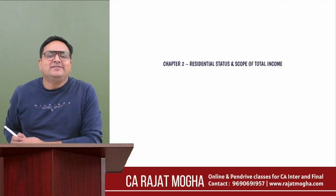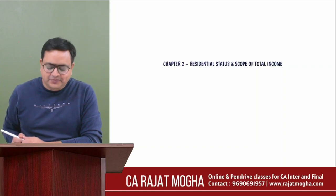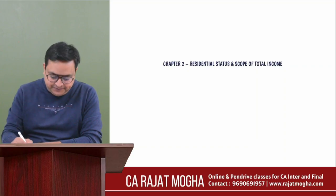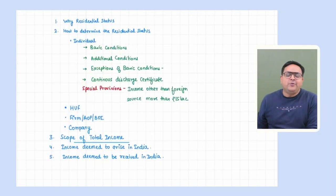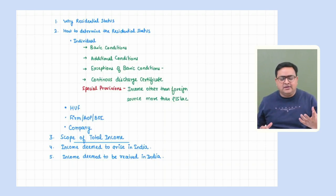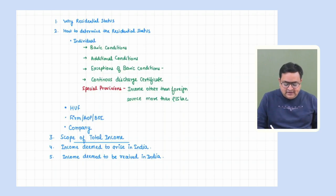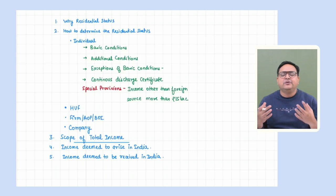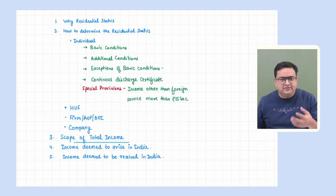Hi everyone, hope you all are doing great. Let's start with the revision of Chapter 2: Residential Status — a very easy chapter. Before we start, you should have a clear picture of the topics we need to cover. First, you should know why this chapter is important and why we have to determine the residential status of any assessee. Second, you should know how we will determine it.